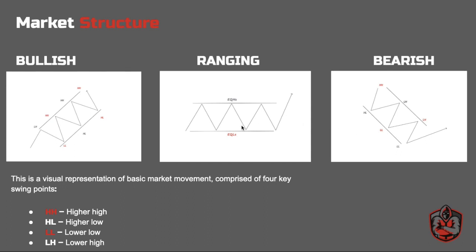A bearish sentiment, referred to as a downtrend, is when price is printing a series of lower highs and lower lows. These basic market movements are comprised of four key swing points: higher highs, higher lows, lower lows, and lower highs. In an uptrend scenario, when price pulls back and then impulses it closes above that recently created lower high, therefore creating a higher high. When price impulses and pulls back, it closes above that prior low therefore printing a higher low.